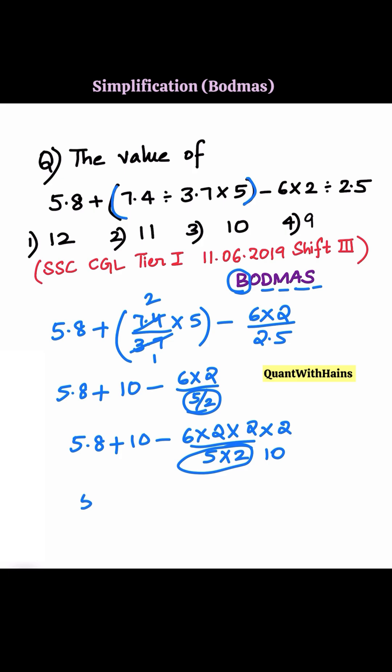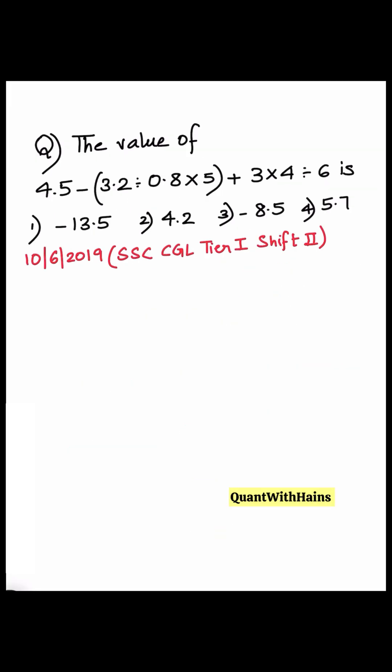It becomes easy to solve: 5.8 plus 10 minus 2 times 2 is 4, 4 times 2 is 8, 8 times 6 is 48 by 10, which is 4.8. 5.8 minus 4.8 is 1, plus 10 equals 11. The answer is option 2.